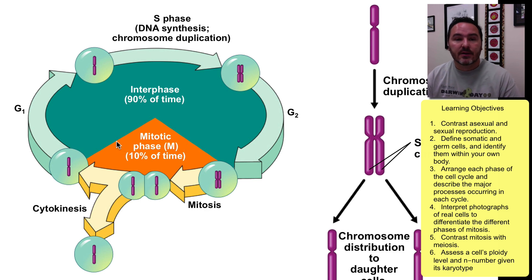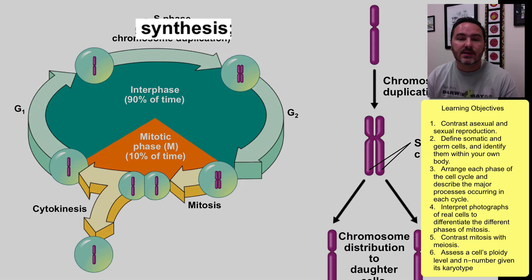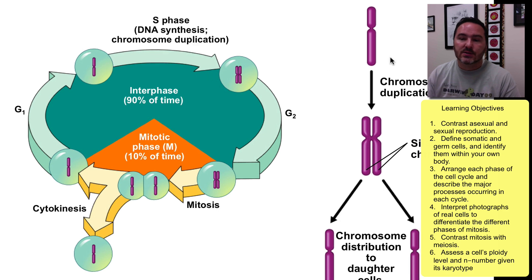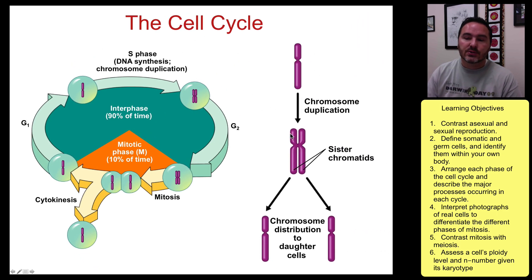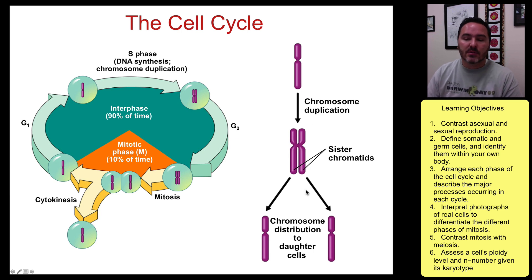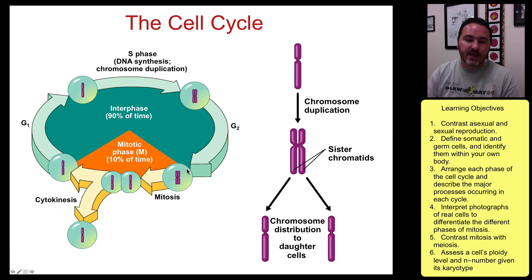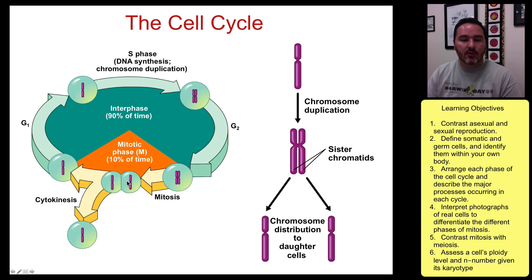In interphase, there are three different phases: G1, the S phase — where S stands for synthesis and is where DNA is actually duplicated — and G2. During S phase we go from one chromosome to two sister chromatids, so double the amount of DNA but not double the number of chromosomes. It does not become two chromosomes until those sister chromatids separate. After G2, another growth phase, we reach the mitotic phase, and eventually the cells separate and you have two new cells created from one original cell.